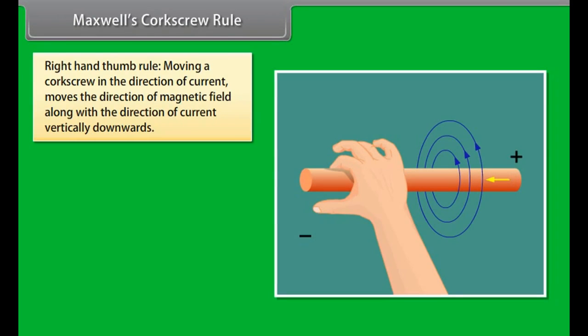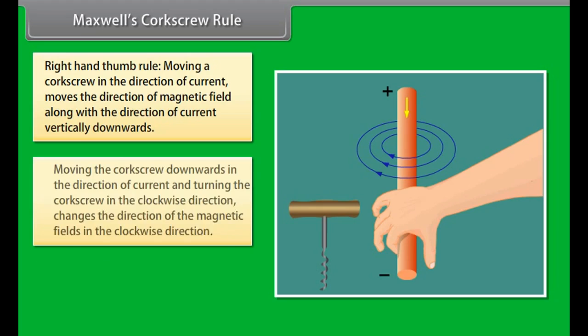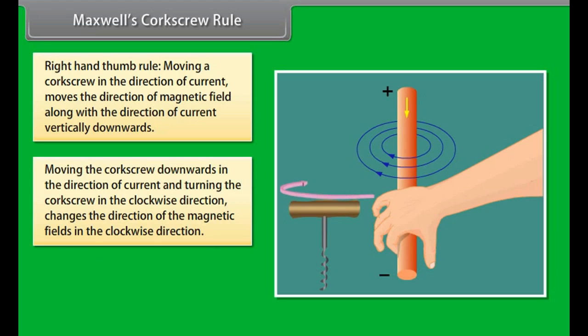Maxwell's Corkscrew Rule. Maxwell's Corkscrew Rule, also known as Right-Hand Thumb Rule, defines that moving a corkscrew in the direction of current moves the direction of magnetic field along with the direction of current vertically downwards. If we move the corkscrew downwards in the direction of current and the handle of corkscrew is turned in the clockwise direction, then the direction of the magnetic fields is in the clockwise direction.